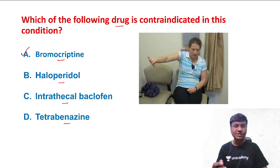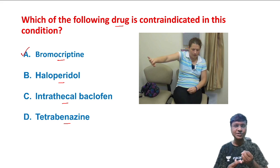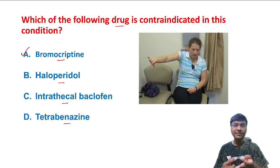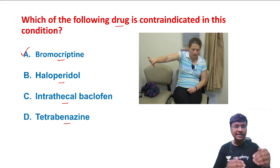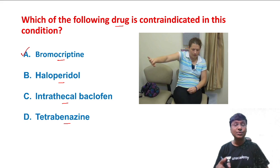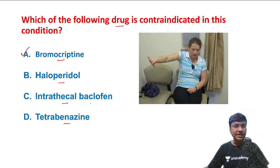The treatment for hemibalismus is first to treat the underlying cause, which could be infection, neoplasm, amyotrophic lateral sclerosis, or even hyperglycemia. If the involuntary movement persists despite treating the underlying cause, you need to give anti-dopaminergic drugs — not dopaminergic drugs.